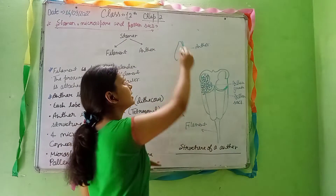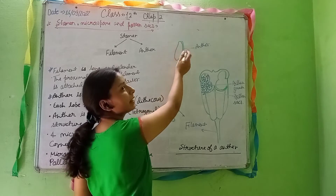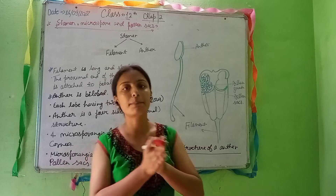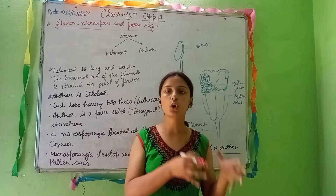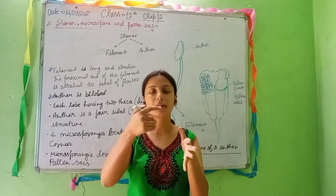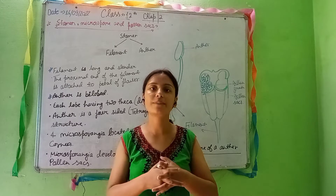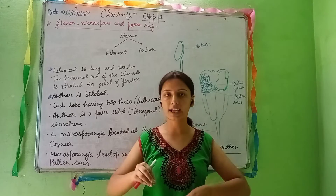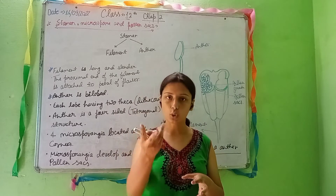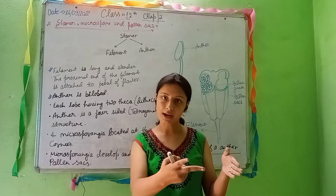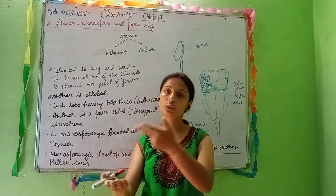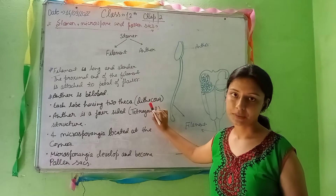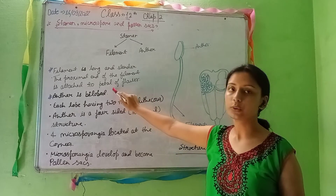We can see the anther at the other end. The anther has two nodes, and each node has two lobes — giving the anther a total of two lobes. The anther is therefore described as dithecous and bilobed.